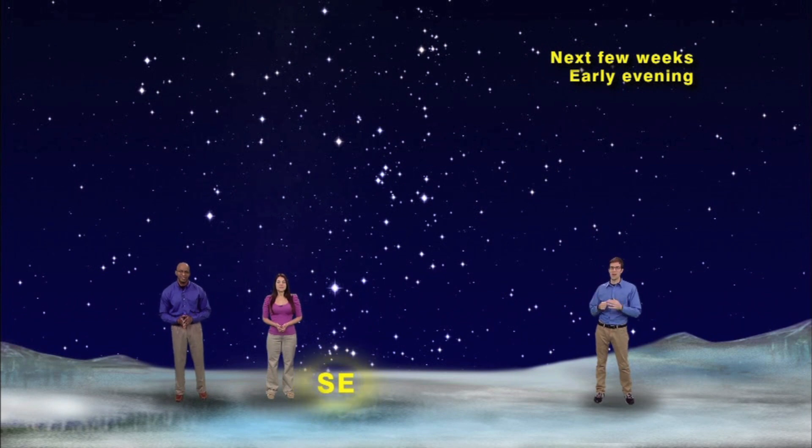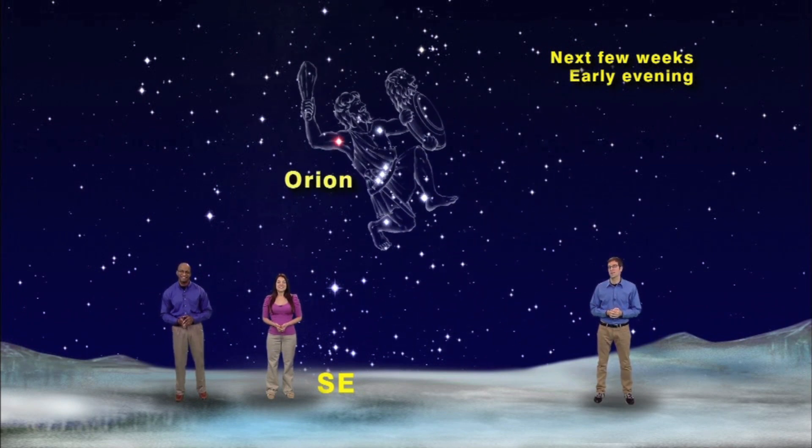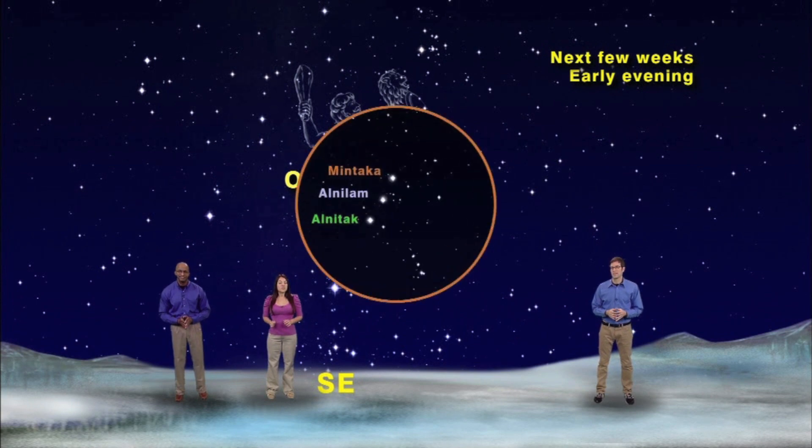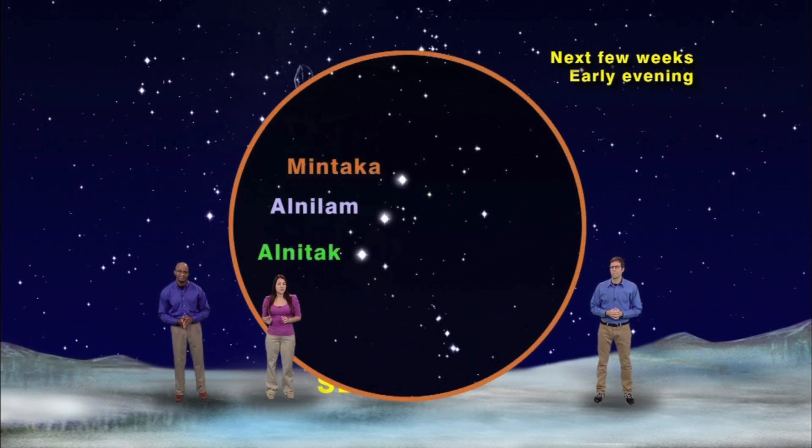And in the southeast, you'll see what has to be the second most familiar pattern of stars, after the Big Dipper that is. A pattern which is loaded with bright stars known as Orion the Hunter. To find him, look for his belt, which is simply three evenly spaced stars in a row.